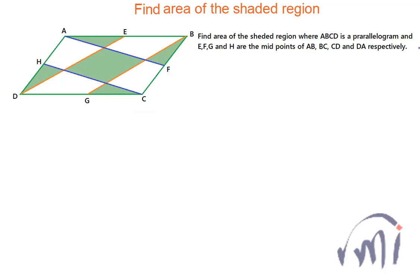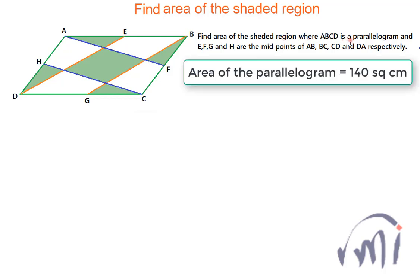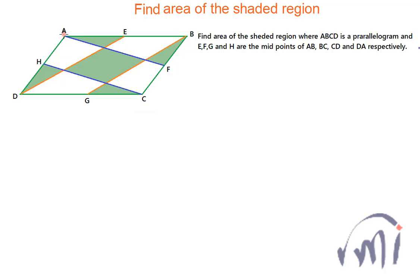Here we have a problem sent by Zahean. In this problem we have to find the area of the shaded region where ABCD is a parallelogram and EFGH are the midpoints. E is a midpoint of AB, F is a midpoint of BC, G is a midpoint of CD, and H is a midpoint of DA.